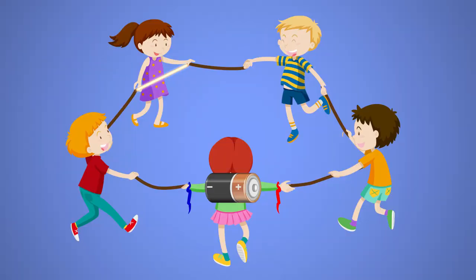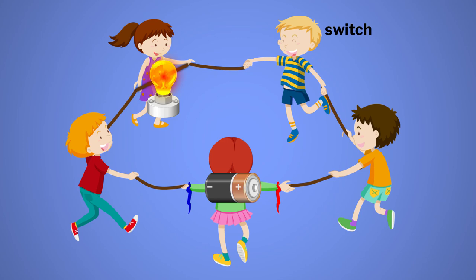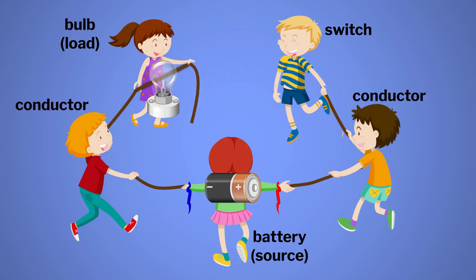Another student is given the role of a bulb, and holds the rope tightly to represent the bulb as a load. Another student takes the role of a switch — only this student has the ability to disconnect the circuit. The other students are conductors and hold the rope less tightly. The speed of pulling the ropes can be compared to the resistance.